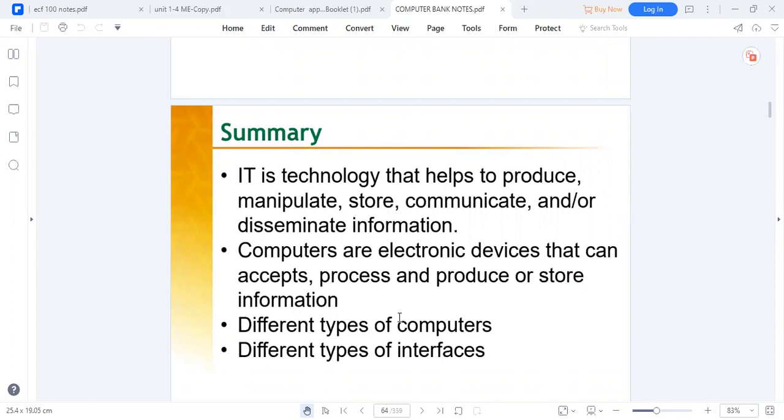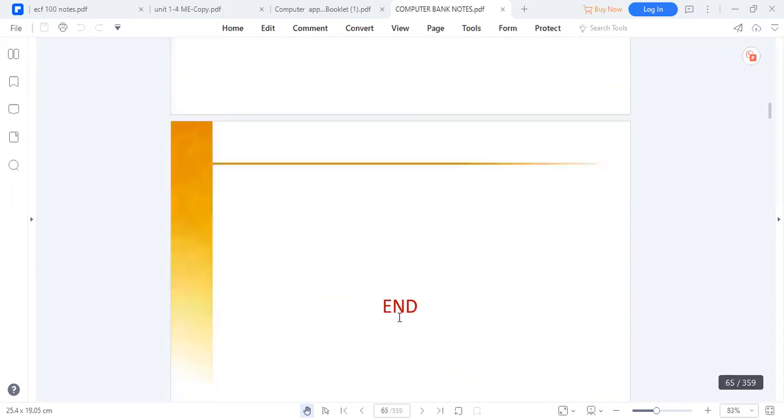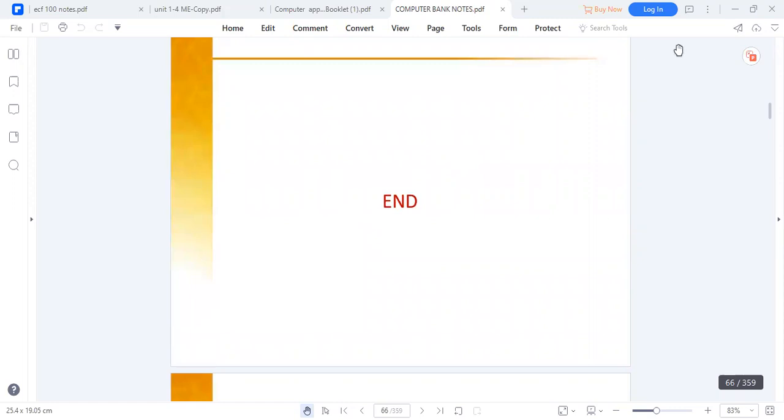Computers are electronic devices that can accept, process, produce, or store information. There are different types of computers. We have the mainframe, the supercomputers or servers. We also have different interfaces. This is how our second unit ends. Are there any questions?